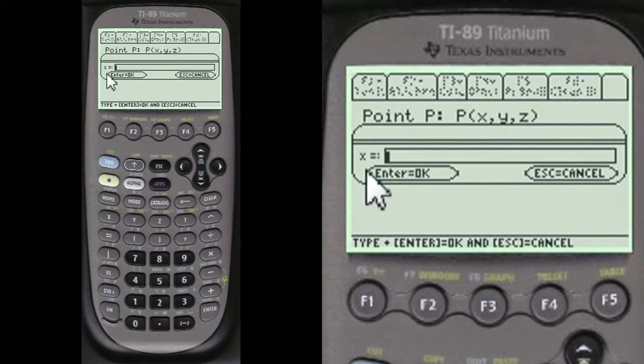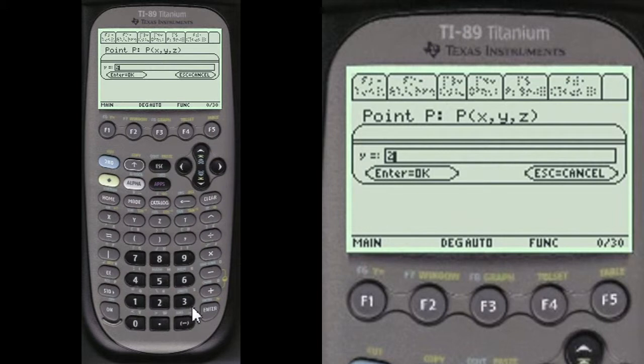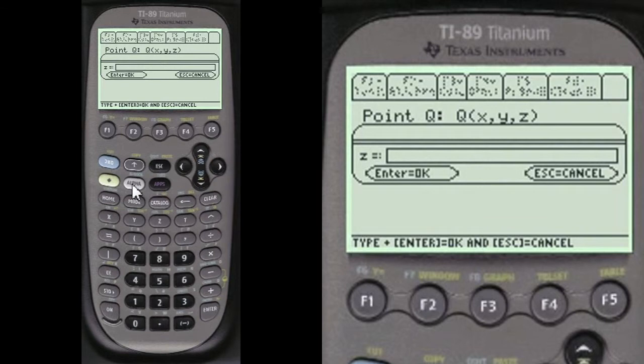And we're going to press alpha before we enter anything in these empty lines here. We're going to put in the points, alpha for P. It's the PQ system. Alpha 1, alpha 2, alpha minus 3, alpha 5, alpha minus 6, alpha minus 1.